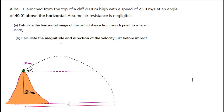Before we do that, we need to find the vertical and horizontal components of the velocity. The initial speed is 25 m/s. The horizontal component is adjacent to the angle, so it is 25 cos 40. The vertical component is 25 sin 40.